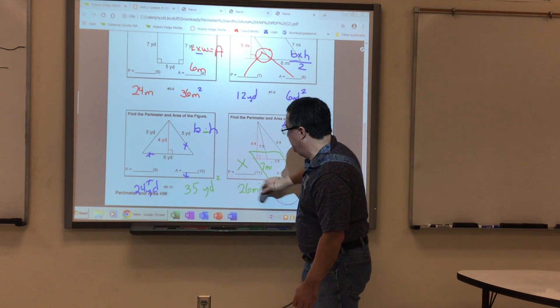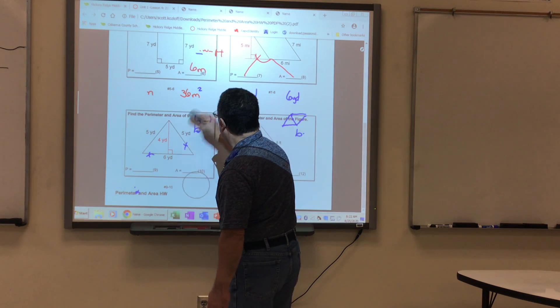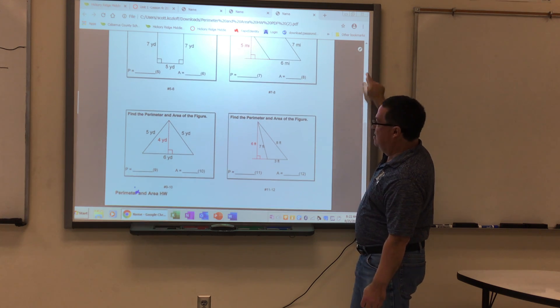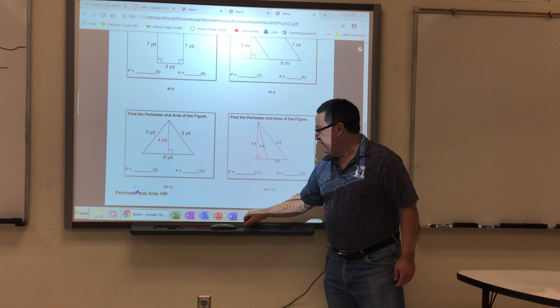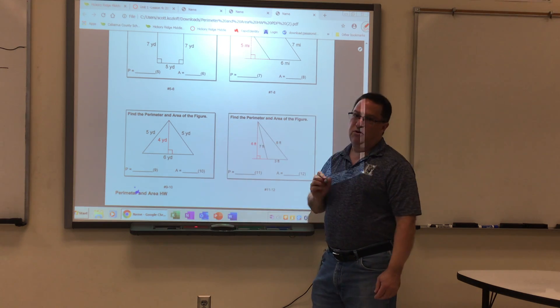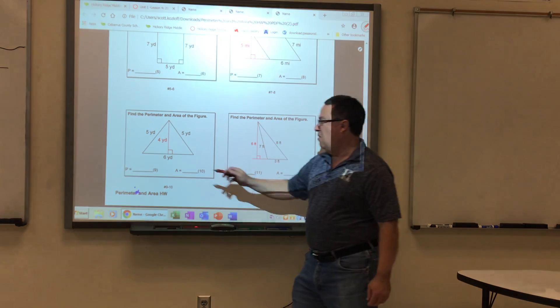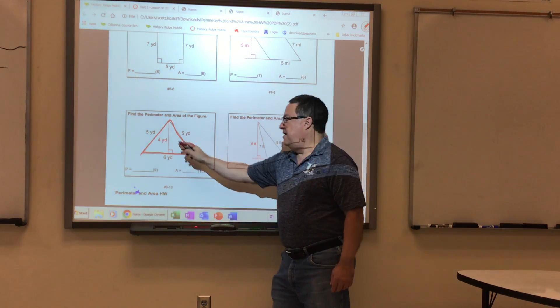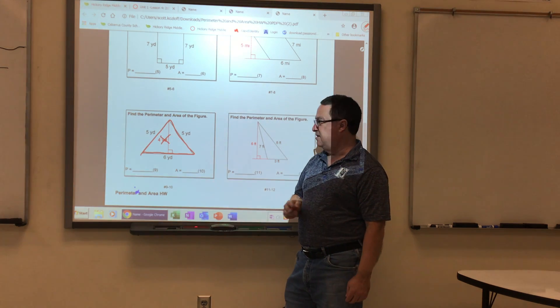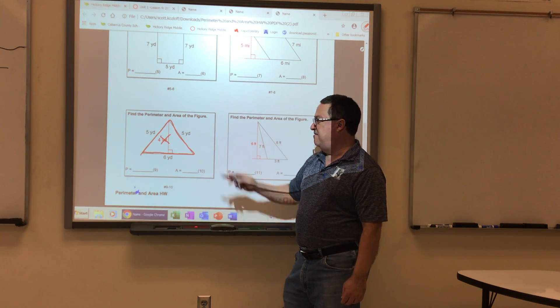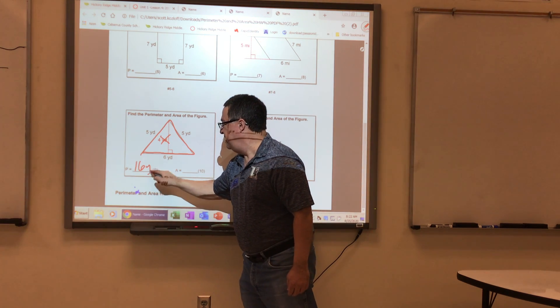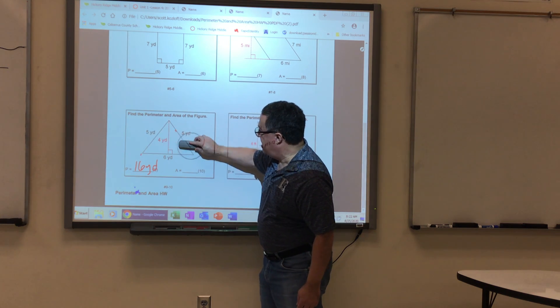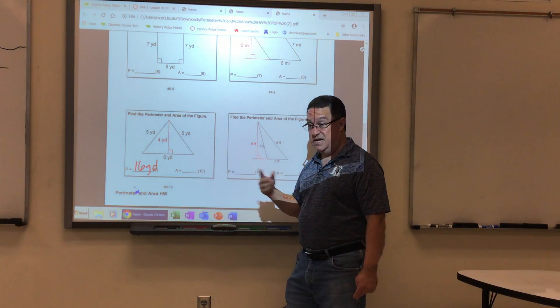Let's go down to the last two problems. Find the perimeter of this area, or perimeter and area. Again, the perimeter of a triangle are the three solid lines that make up the triangle. So I'm not using the height to find the perimeter. So five plus five plus six is 16 yards. I'm going to erase that, and you are welcome to stop this if needed at any point in time, and then start again.